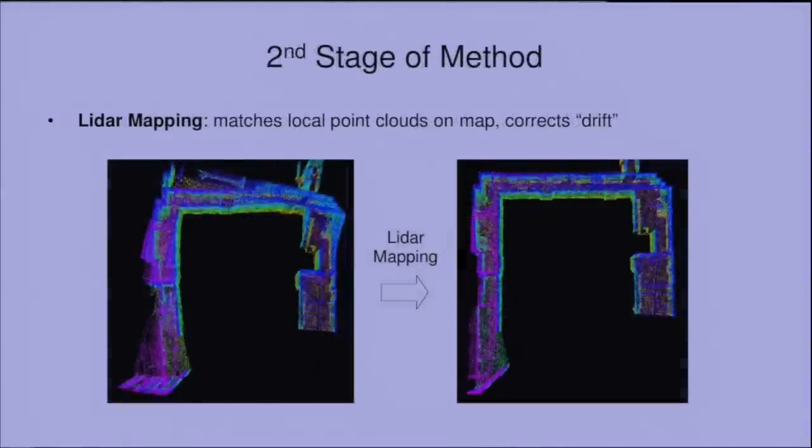Then the mapping step comes in to further process the point cloud. It takes the local point cloud and matches it to the current map field. This step takes much longer time to converge. The mapping step runs at lower frequency to enforce accuracy on the map. There is no motion model in the mapping step because distortion is removed. It is more similar to a standard ICP method.